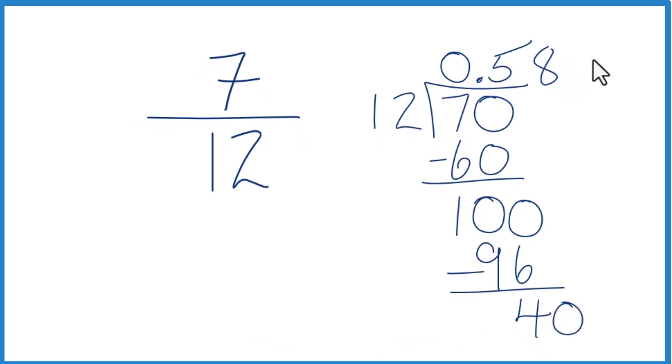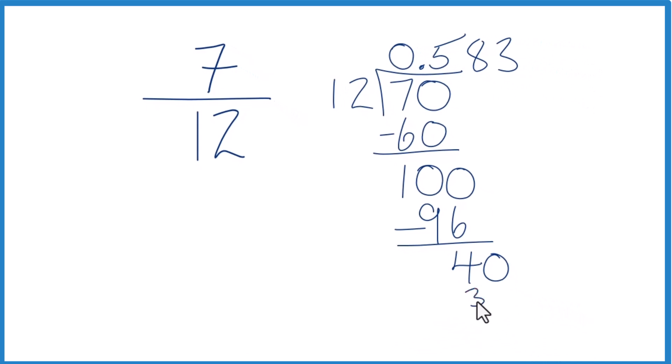Call it 40. Move over one. 3 times 12 is 36. We subtract and get 4.